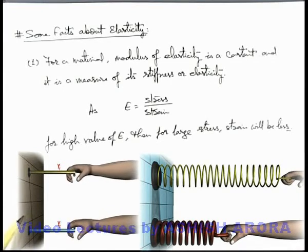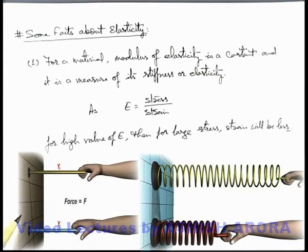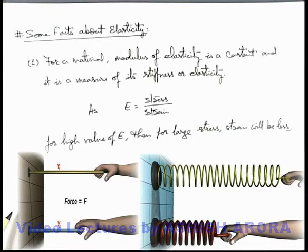If equal forces are applied on both the rods, the one which is having lower modulus of elasticity will be subjected to a large value of strain. And the one which is having higher modulus of elasticity, which is more elastic here, we can see the strain will be less or elongation will be less. Whereas sometimes students might have a misconception...